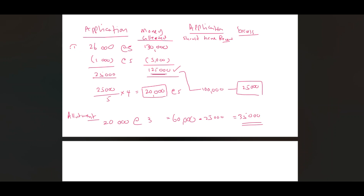You need to record application money received for 26,000 shares: debit bank account and credit application and allotment account with $130,000. The second entry is to reject the 1,000 applications worth $5,000: credit bank and debit application and allotment account. Then for collecting allotment money, since shares were prorated to 20,000 at $3 = $60,000, but after deducting the excess $25,000, you record $35,000: debit bank, credit application and allotment account.